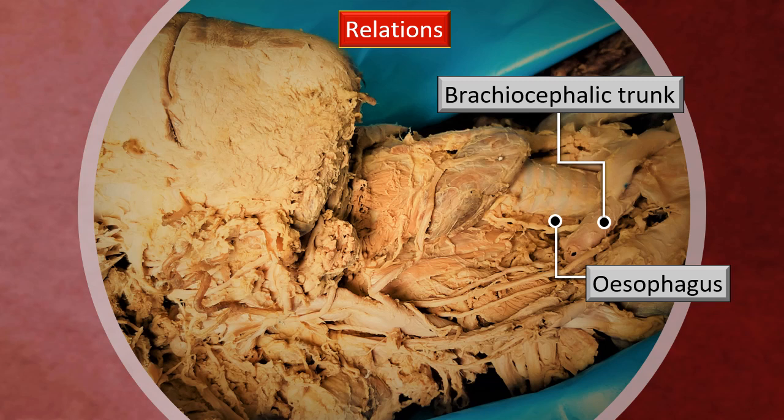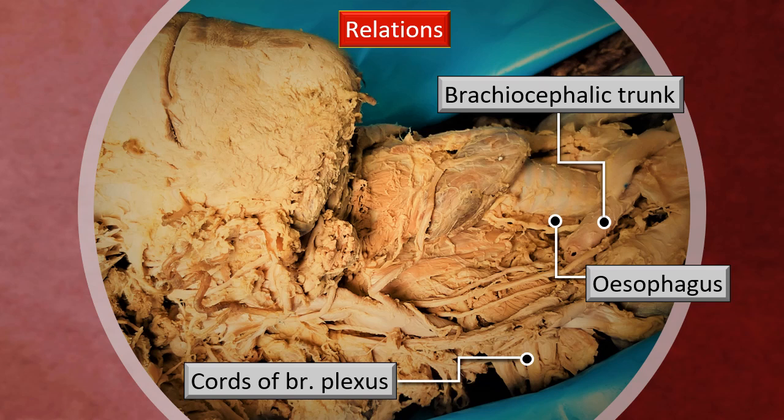That's the brachiocephalic trunk. Once the scalenus anterior is identified, we can also identify the cords of the brachial plexus. In the name of thyroid gland dissection and a discussion on its relations, we are virtually covering all the structures in its vicinity, although only a few are directly in immediate relation to the thyroid gland. That's an advantage of having dissection material in a production lecture.